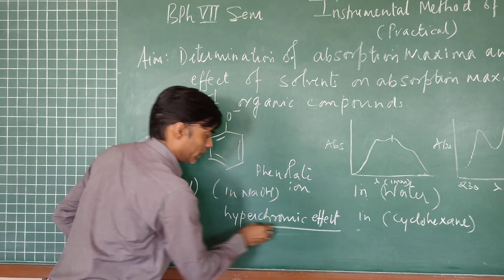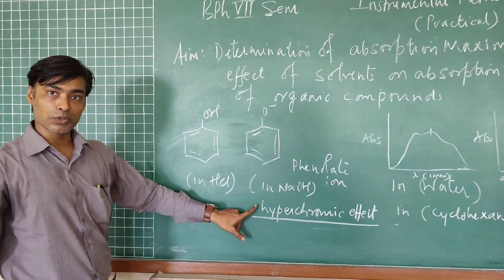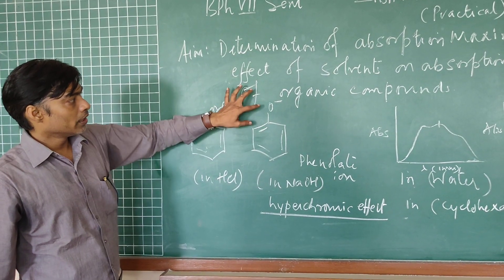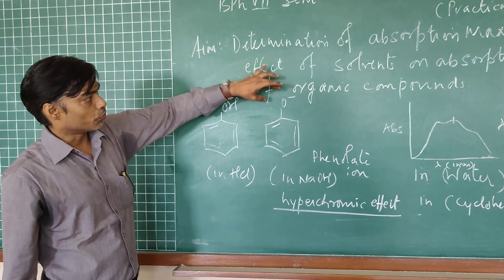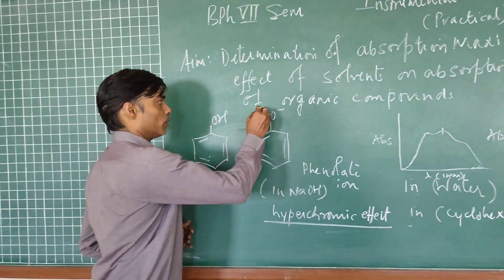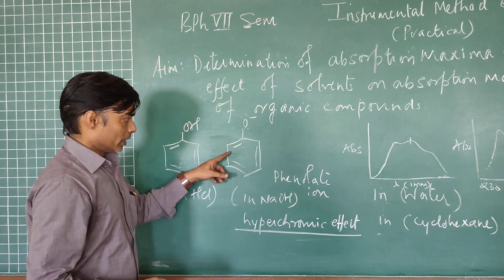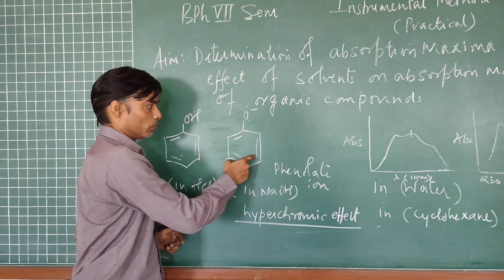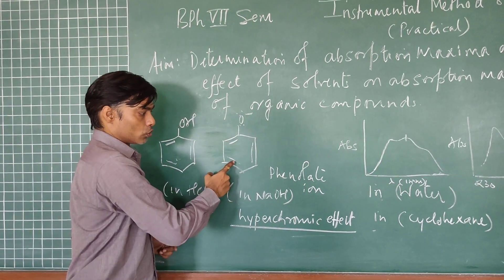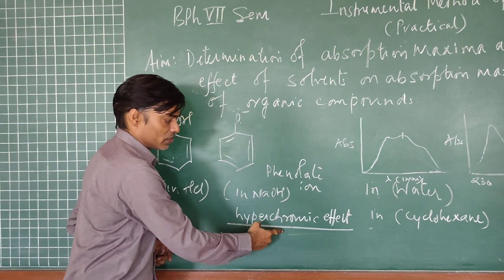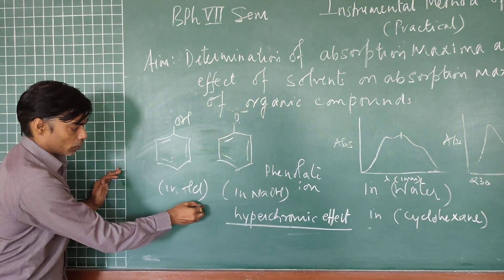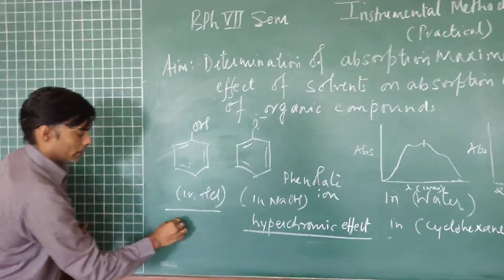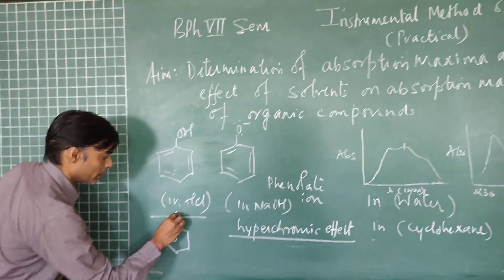The hyperchromic effect occurs because the change in pH causes a structural change in phenol — it converts to phenolate ion — and this extends the conjugation from the ring to an additional point. This extended conjugation increases absorption intensity. In acidic media, no such hyperchromic effect is observed since the structure of phenol remains unchanged. Similarly, we can consider aniline as another example.